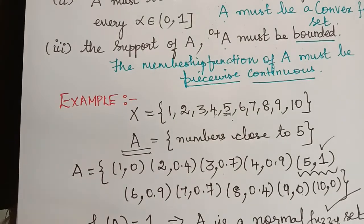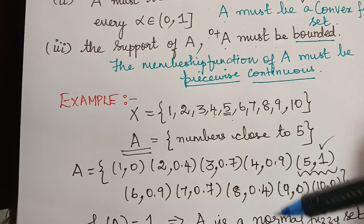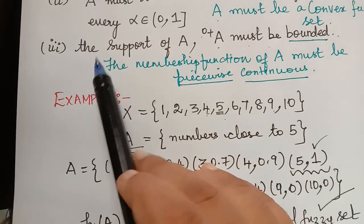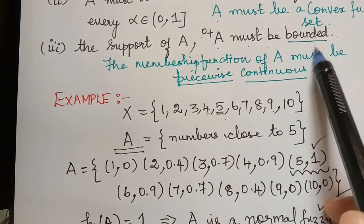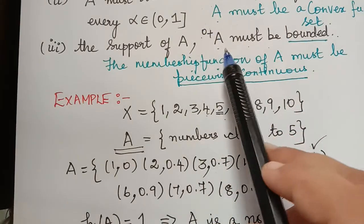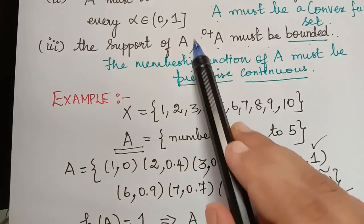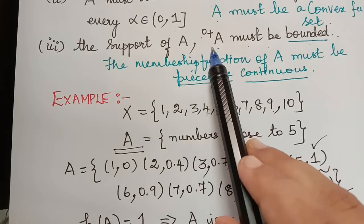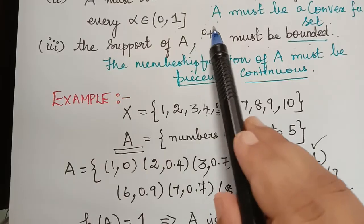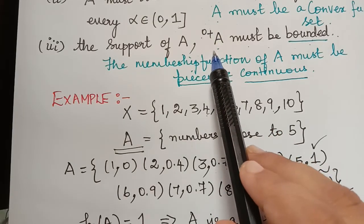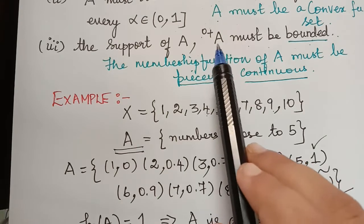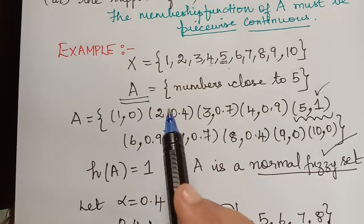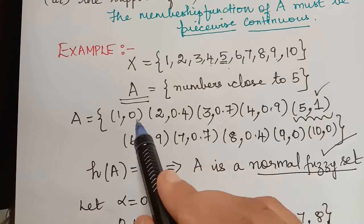Now let us check the third condition. We have to prove that the support of the fuzzy set A is bounded — that is, the strong zero cut of A must be bounded. Let us find the strong zero cut of A: all those elements whose membership grades are strictly greater than 0 will be in this set. If you check the definitions from the previous lectures you will understand it better.